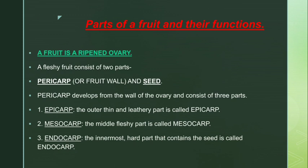Pericarp develops from the wall of the ovary and consists of three parts: epicarp, mesocarp, and endocarp.